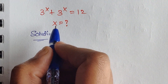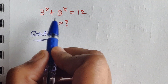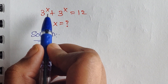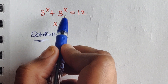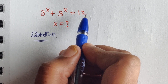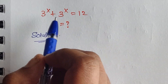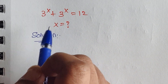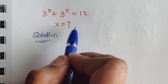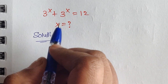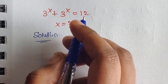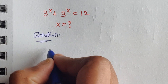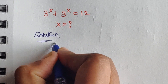Hello everyone, welcome back to our channel. Here we have one problem: 3 to the power of x plus 3 to the power of x equals 12. We have been given this equation and in this problem we have to find the value of x. So how do we solve this? Let's see the solution.